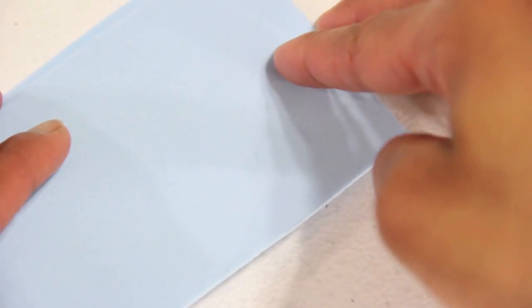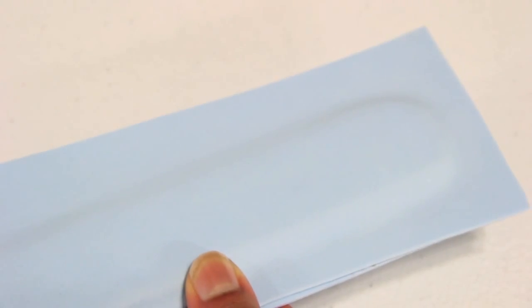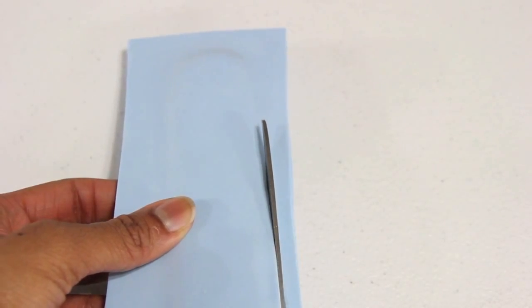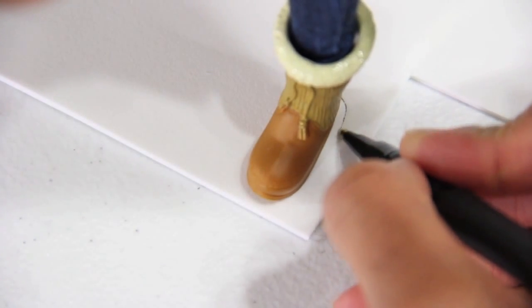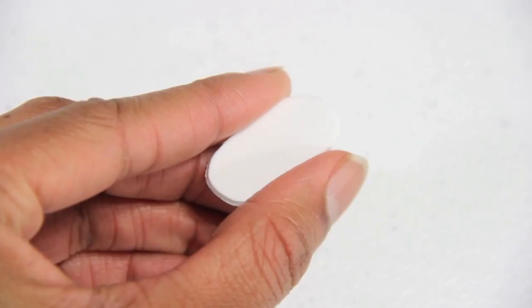I lay another piece of craft foam on top and press down on the edges. Once fully enclosed, I trim off the excess. With a shoe on, I trace my doll's foot onto a piece of craft foam and cut it out.